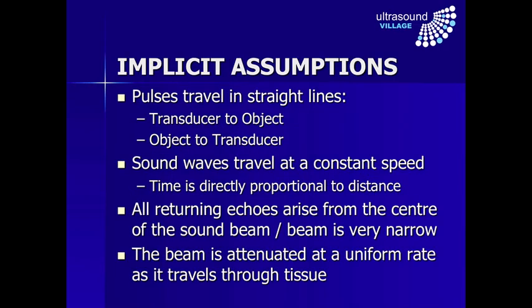But there are some implicit assumptions the machine makes. It assumes that pulses travel in straight lines — the pulse goes directly from the transducer to the object, reflects, and travels straight back. The machine assumes sound waves travel at a constant speed, which is how it determines how far an object is from the transducer by measuring the time taken for the pulse to travel there and back. It also assumes that all returning echoes arise from the center of the sound beam — or alternatively that the beam is very narrow. Finally, the machine assumes that the sound wave is attenuated at a uniform rate as it travels through the tissue.